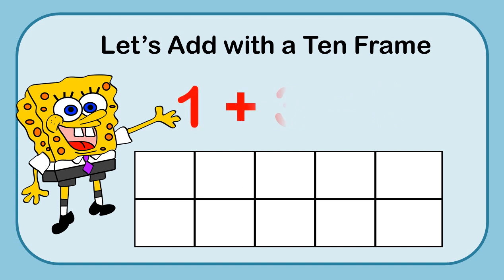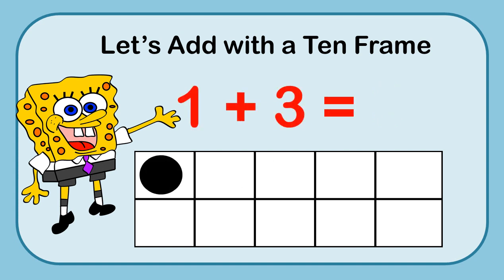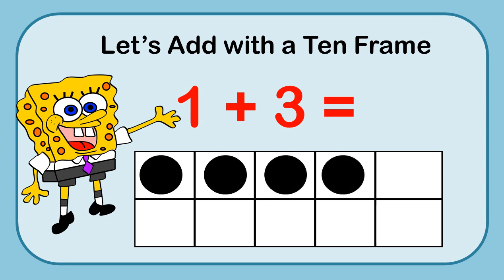Let's look at the equation 1 plus 3. Let's use one of our markers and then 3 more. And count them up: 1, 2, 3, 4. So 1 plus 3 equals 4.